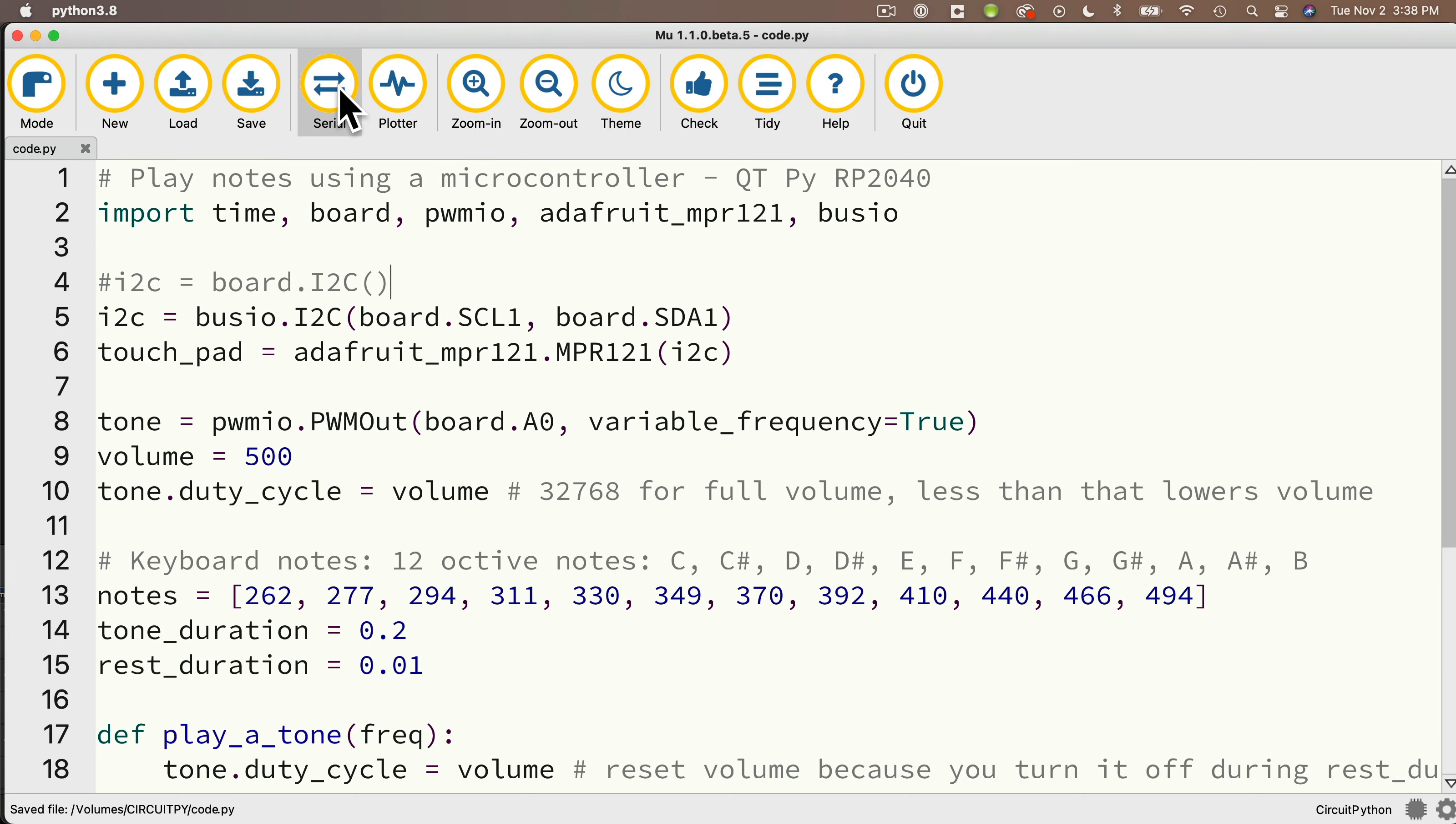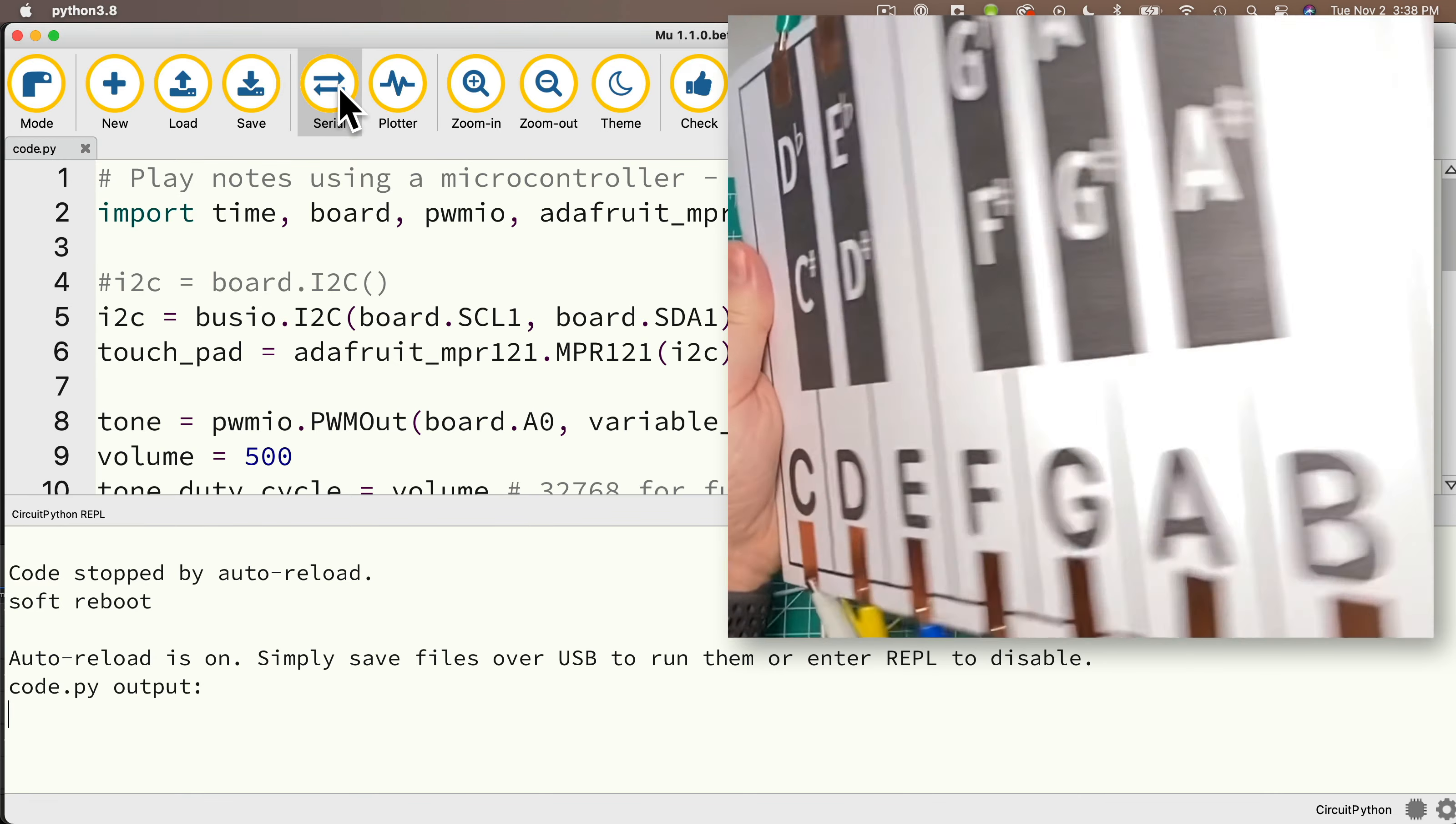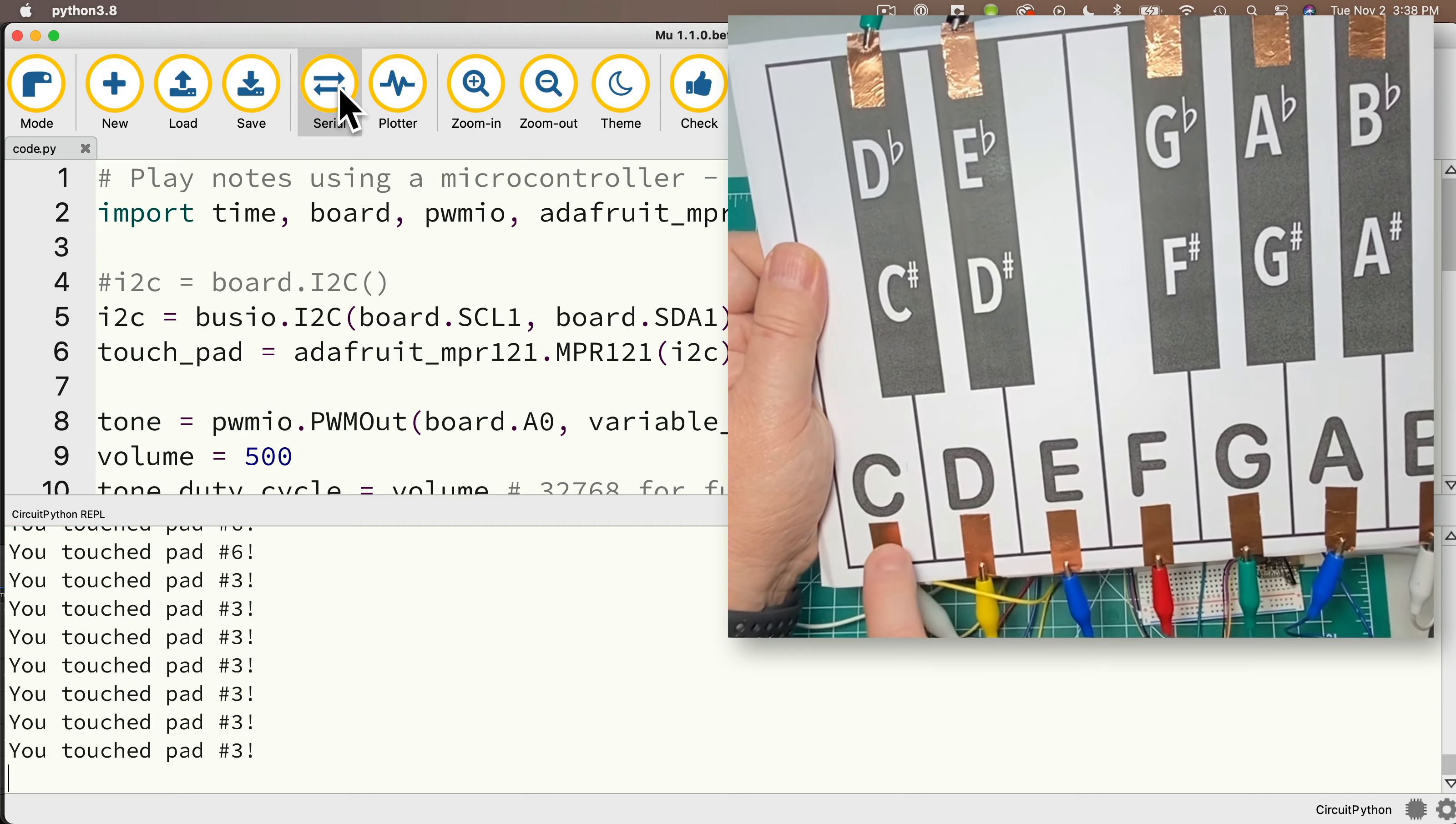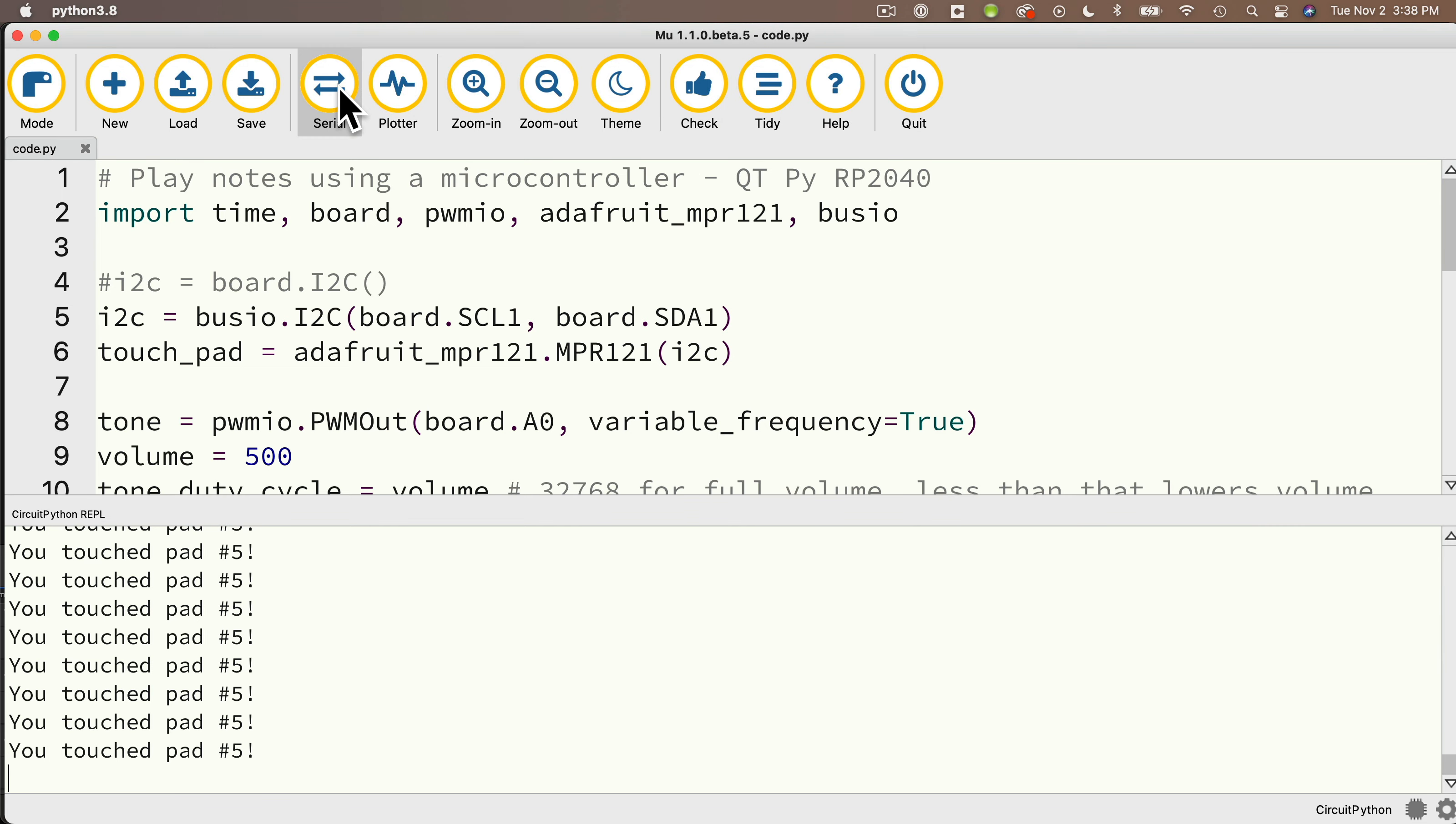Our sensors in the StemmaQT port of the CutiePie, and we've got our speaker into A0. And oh, will you look at that? We've got our keyboard working touch sensitive on two different kinds of CircuitPython boards. You're armed with enough knowledge that if you've got another CircuitPython board that supports PWM out, you can probably go ahead and make this happen on that board too.